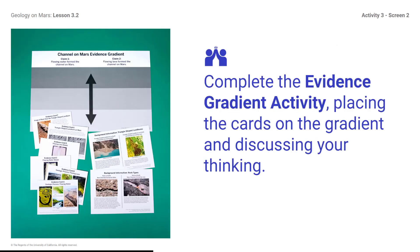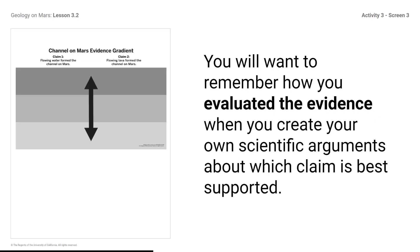Complete the evidence gradient activity, placing the cards on the gradient and discussing your thinking. Examine the evidence gradient student sheet and the channel on Mars evidence cards A–E and background information triangle shape landforms card in the materials folder for this lesson. Refer to the channel on Mars evidence gradient instructions on your devices if necessary. You will want to remember how you evaluated the evidence when you create your own scientific arguments about which claim is best supported. Even though you worked in partners, each of you will individually record how you placed the evidence. Record your completed evidence gradients.